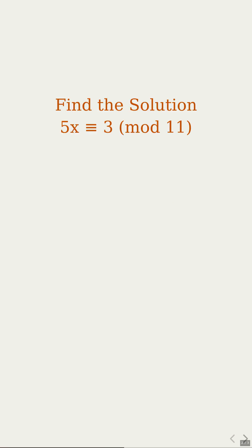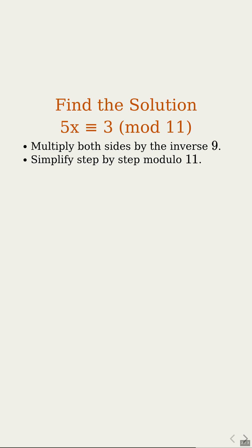Now use that inverse to solve the whole thing in one smooth move. Multiply both sides of the congruence by 9, which is the inverse of 5 modulo 11. So that makes the 5 and 9 combine to act like 1 on x? Exactly. On the right side, we get 3 times 9, which is 27.